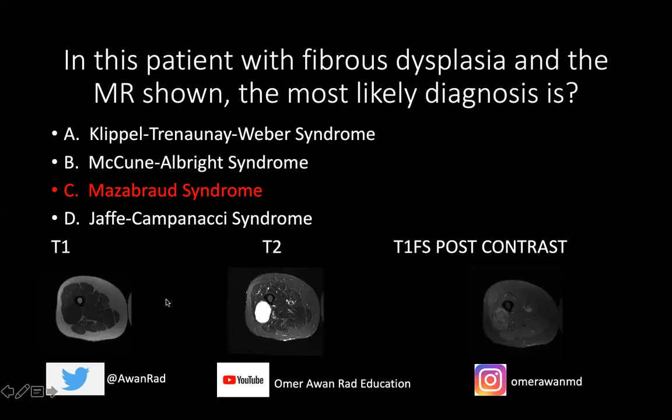Myxomas plus fibrous dysplasia is seen in the setting of Mazabraud syndrome. Klippel-Trénaunay-Weber syndrome involves bony and soft tissue hypertrophy, varicose veins, and a cutaneous hemangioma — not a myxoma. McCune-Albright syndrome involves precocious puberty, cafe au lait spots, and fibrous dysplasia. Jaffe-Campanacci involves multiple non-ossifying fibromas and can also have cafe au lait spots.